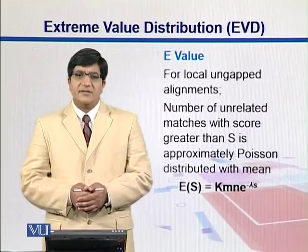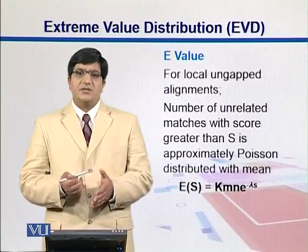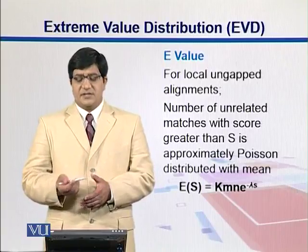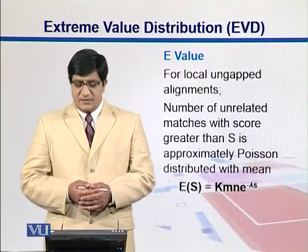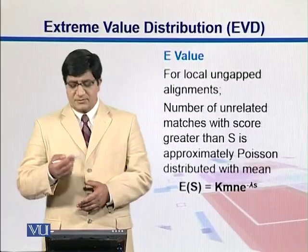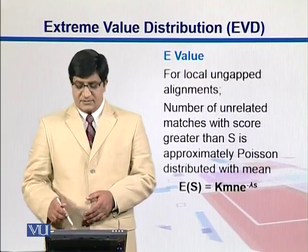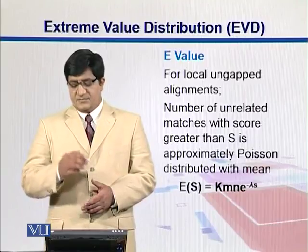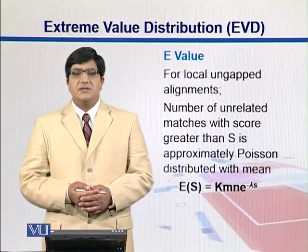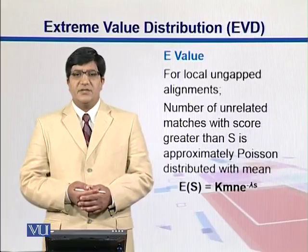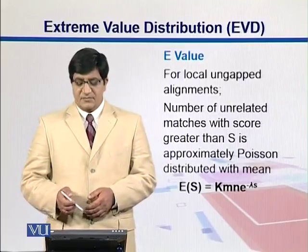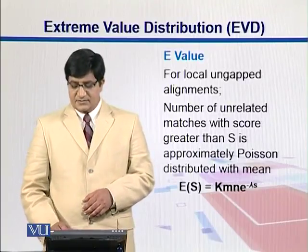There is another parameter called the e-value, which is related to HSPs — how many significant high-scoring pairs we are getting. The number of unrelated matches with a score greater than S is approximately Poisson distributed with mean E = K·m·n·e to the power of minus lambda times S. This gives us the expectation value for how many high-scoring pairs we will get, which we call e-values.